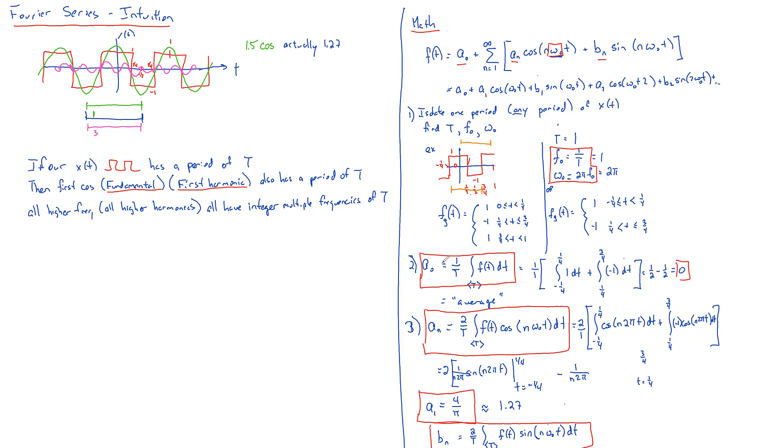Once you find all these, a single A sub 0 and a whole series of A sub Ns and B sub Ns, how many do you need to find? Probably not all infinity. From the intuitive things I showed you before, if you find the first six or eight, you're probably going to get pretty close to your original waveform. So you might find A sub 1 through A sub 6 and B sub 1 through B sub 6.